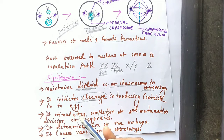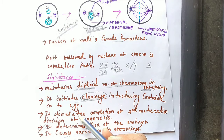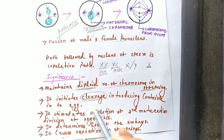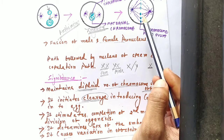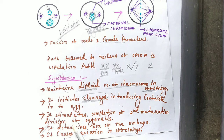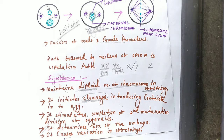The second point is that fertilization initiates cleavage. During fertilization, the proximal centriole enters into the ovum or secondary oocyte, and this proximal centriole initiates cleavage by forming spindle fibers. The third point is that it stimulates the completion of the second maturation division of oogenesis. The secondary oocyte is arrested at metaphase 2 of meiosis 2; when sperm enters, the metaphase promoting factor is inactivated and the anaphase promoting complex is activated, completing meiosis 2 and forming the ovum and second polar bodies.